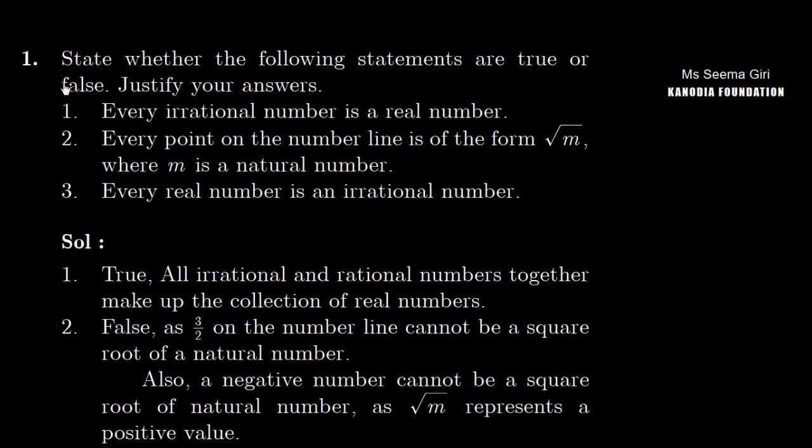Let's take the first part of this question. Number one: every irrational number is a real number. Yes, true. All irrational numbers are real numbers. Real numbers can be divided into two parts: rational numbers and irrational numbers.